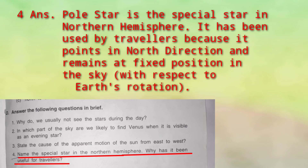The Pole Star is in the northern hemisphere and it is special because it has been used by travelers. Woh north ki taraf point karta hai, aur uski jo position hai woh hamesha fixed rehti hai with respect to the rotation of the earth. That is why it always points towards the north direction.